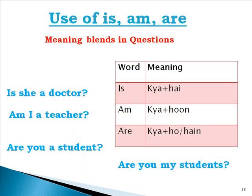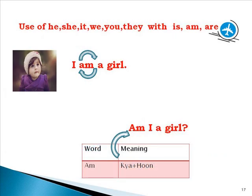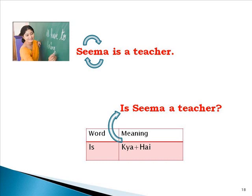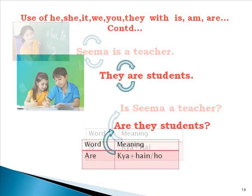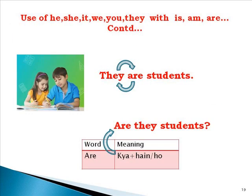As I mentioned before, meaning blends in questions. Use of is/am/are — meaning blends in questions. Is she a doctor? — Kya woh doctor hai? ('Kya' and 'hai' blend into 'is'.) Am I a teacher? Are you a student? — Kya aap student ho? Are you my students? — Kya aap meri students hain? For example: I am a girl → Am I a girl? Seema is a teacher → Is Seema a teacher? They are students → Are they students? 'They are students' is a positive statement, and 'Are they students?' is a question.